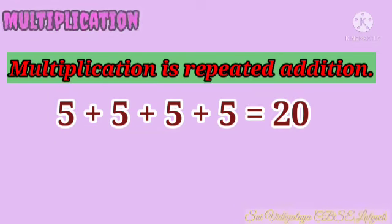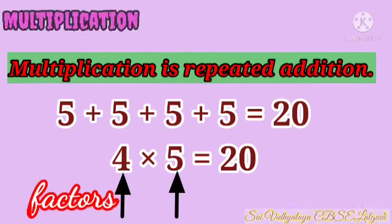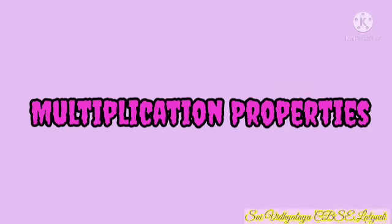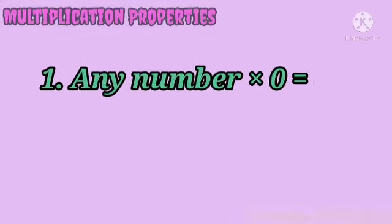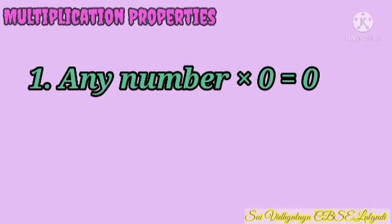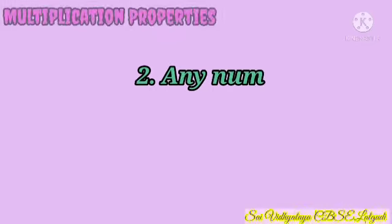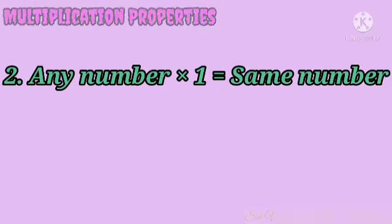We can write this as 4 into 5 is equal to 20. Here 4 and 5 are factors, and 20 is called the product. Let's see some multiplication properties. First property: the product of a number and 0 is always 0 — that is, any number multiplied by 0 is equal to 0. For example, 25 into 0 is equal to 0.